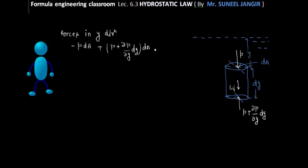The weight acts downward, so we write −W. The net force equals zero because the fluid is at rest — no inertia force. Solving: the −P·dA and +P·dA terms cancel, leaving +(dP/dy)·dy·dA − W·dA·dy = 0.